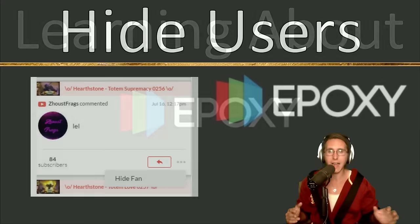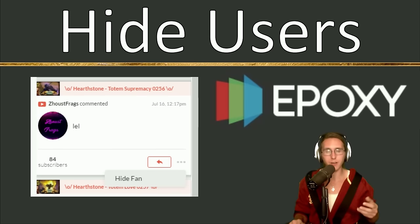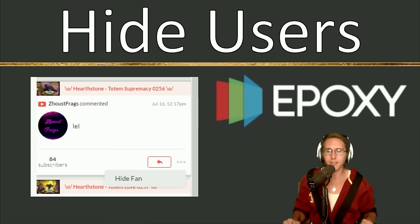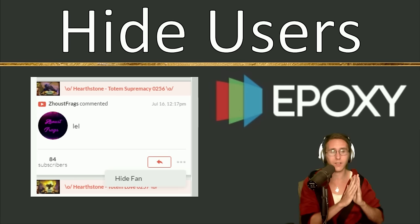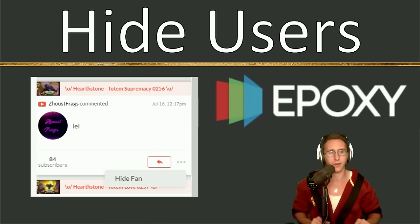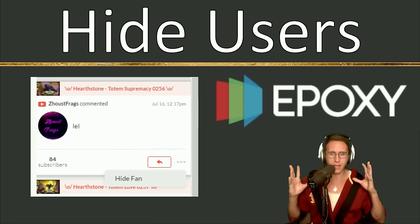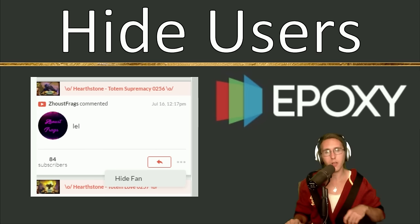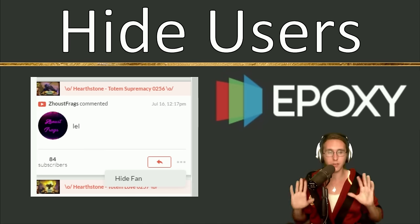I want to talk about hiding a user. In Epoxy, people might often comment on your YouTube videos, your Twitter, or anywhere else. Let's say you don't like this person — you see their comment and there's negativity, you don't like it. You don't want to tell them directly, but you can hide them in Epoxy. All you need to do is go to the three dots and hide the fan, and they're gone from Epoxy. They're not blocked on your original channel, but that's okay. If you forgive this person, you can just take their name off and you're good to go.